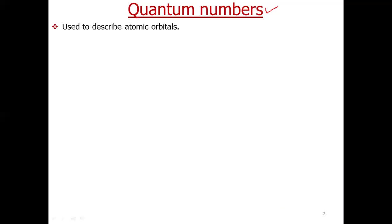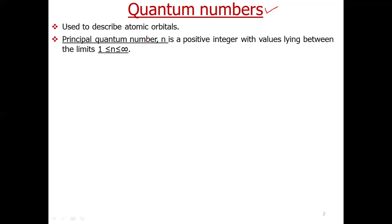The first quantum number is called the principal quantum number, denoted by small n. It can have any positive integer value starting from 1 up to infinity. The value of n tells us about the shell in which the electron is present. Positive integer means the value of n will be a whole number; it cannot be a fraction.